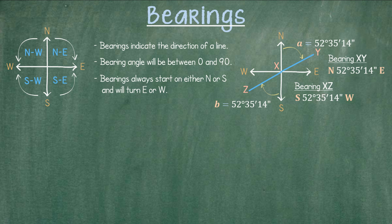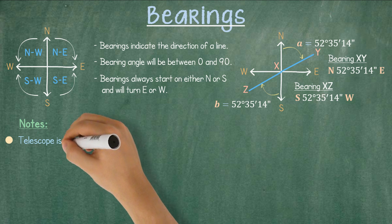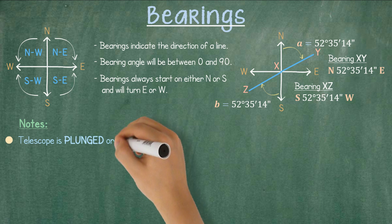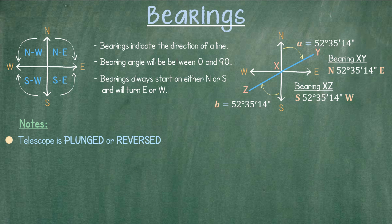Now let's take a few notes and observations. If we are told that a telescope has been plunged or reversed, this means that the telescope was turned 180 degrees from the current position. The turn can be in either direction — left or right.